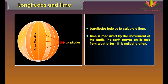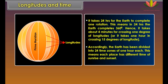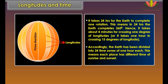180 degrees east and 180 degrees west is one longitude. Longitudes help us in calculating the time of various places on the earth. The distance between longitudes is maximum at the equator and goes on decreasing towards the poles.